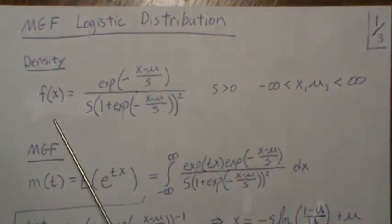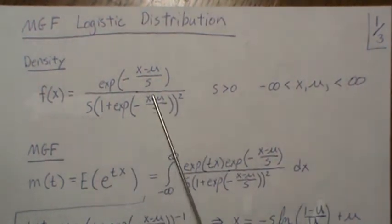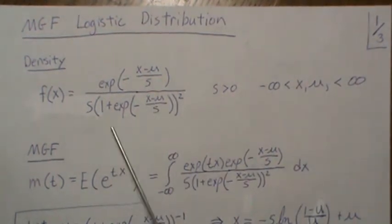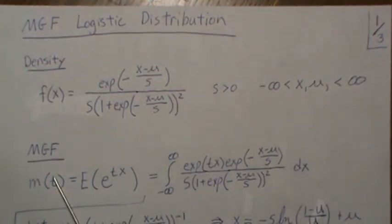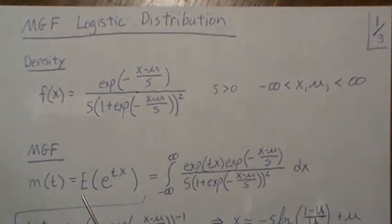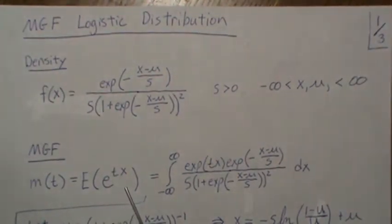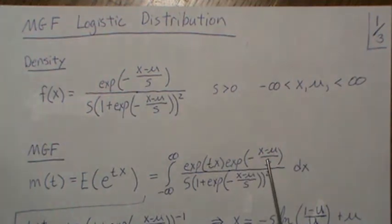The density of a logistic distribution is this, where S is positive, and X and mu are real numbers. The moment generating function, by definition, we're going to call m of t, which is the expected value of e to the tx. That says you plug in e to the tx times the density and integrate it over all possible values.